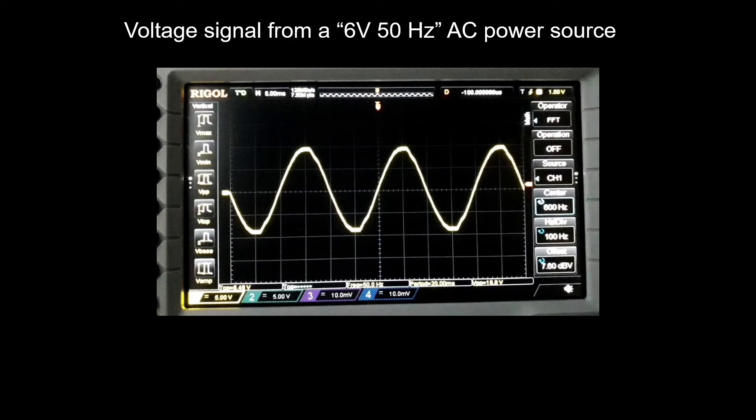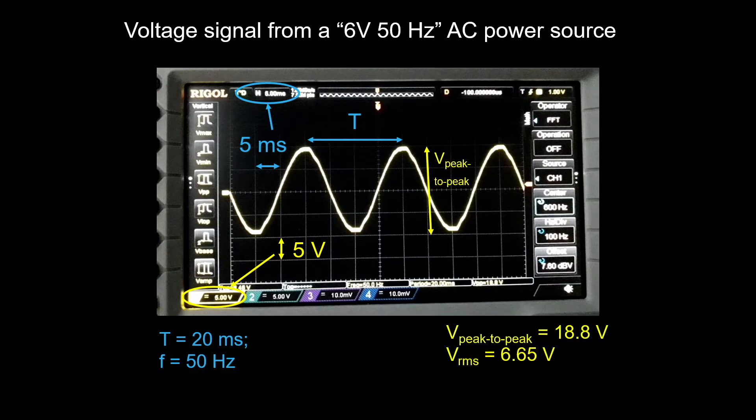The x-axis corresponds to time and each division is 5 milliseconds, so the signal has a period of 20 milliseconds, corresponding to 50 Hertz. The y-axis corresponds to voltage and each division is 5 volts, so we can see that the peak-to-peak voltage is about 18.8 volts, corresponding to a root mean square voltage of 6.65 volts.